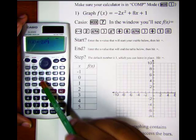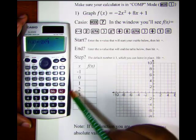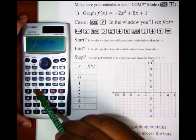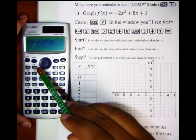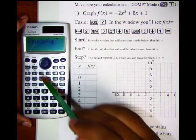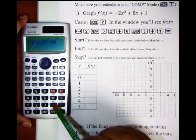Then we'll type in our plus 8 and we want another x again so we'll hit alpha right parenthesis plus 1.